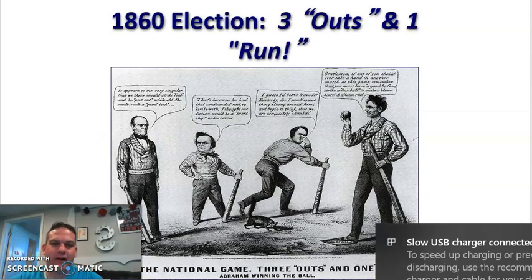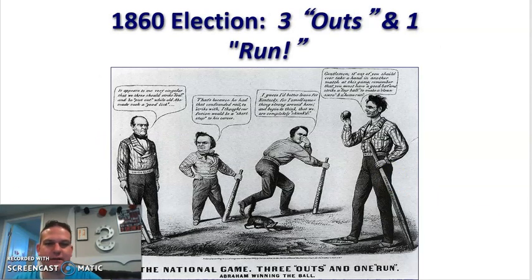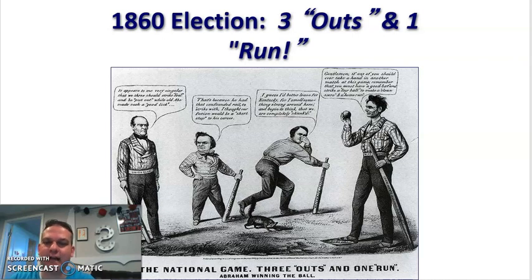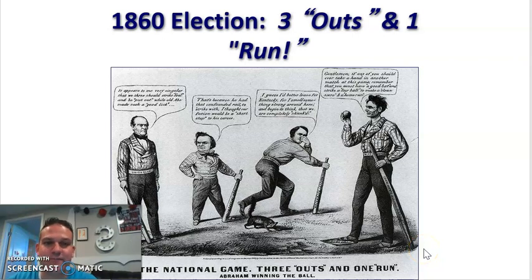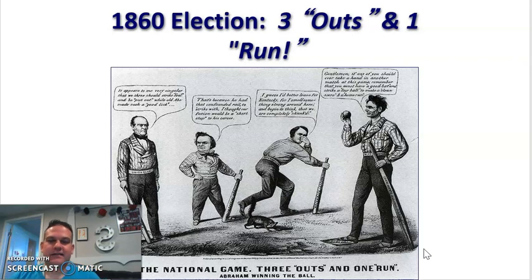Political cartoons start running rampant everywhere. Because baseball was becoming a very popular sport, you see an 1860 election cartoon with three outs — the three candidates competing against Lincoln are out, and Abraham Lincoln is going to win. Notice Lincoln uses a big fence post, not a baseball bat. In class we talked a lot about how Lincoln was a rail splitter growing up — he made fences, so he was known as a big, strong, axe-carrying type of guy — known as the rail splitter.